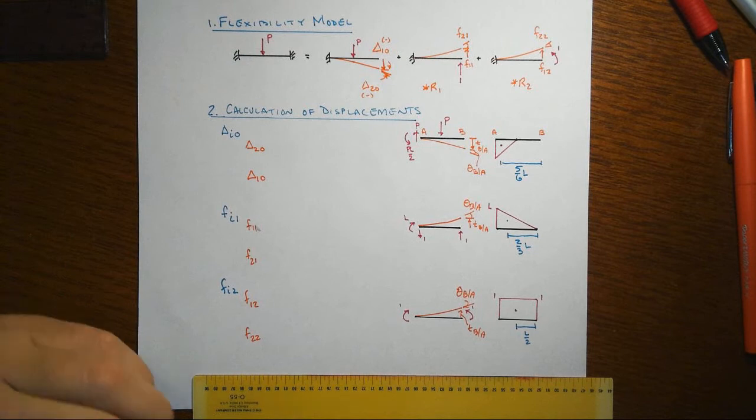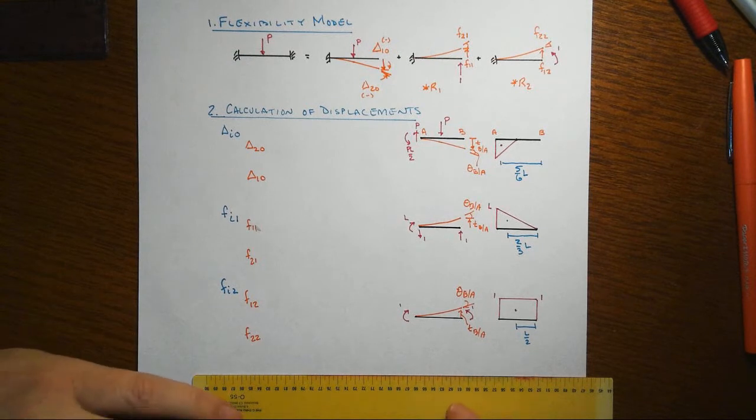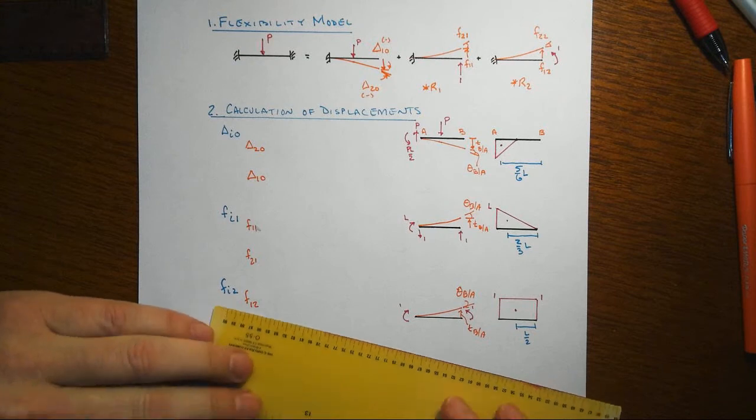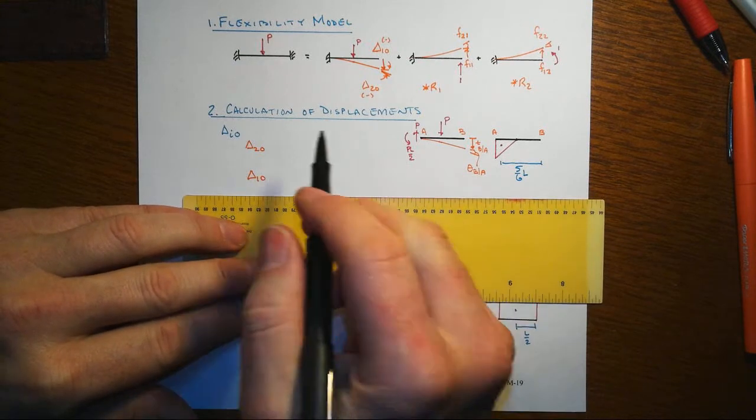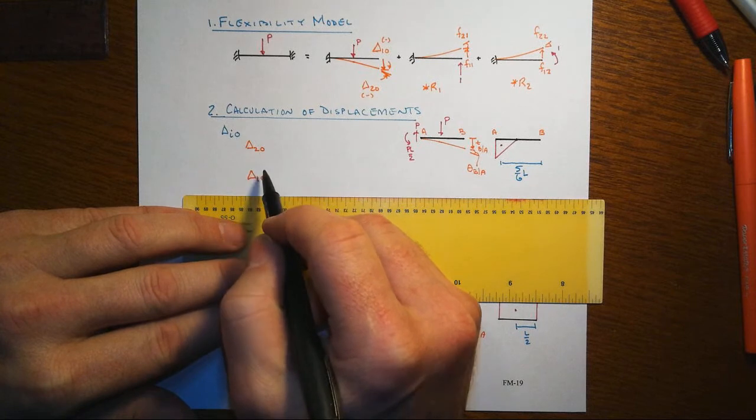In this next step here, after we've set up the flexibility model, we want to go calculate a lot of displacements. In the first instance, let's get the displacements that are associated with the primary load.